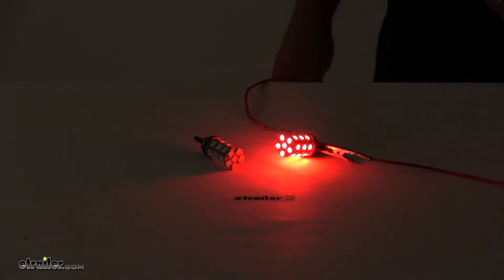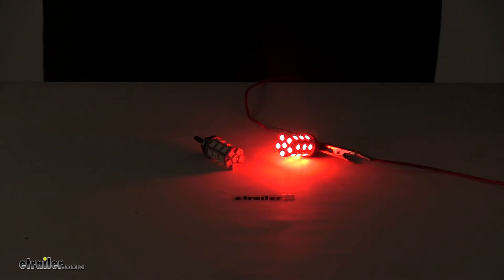When it comes to the light output, we're looking at 380 lumens per bulb, so when combined, that's a total of 760 lumens.